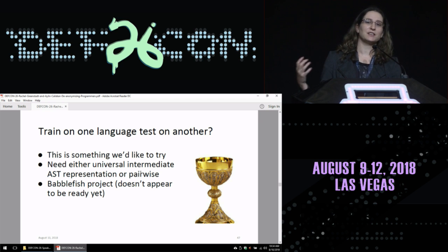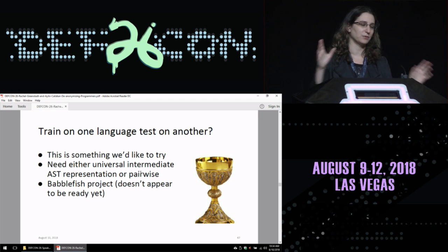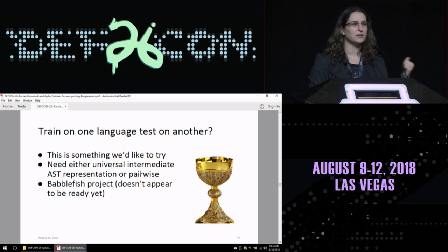One of the holy grail kind of applications of this would be able to test on, to train on one language and test on another language. We don't know currently how much does your programming style change when you actually change languages. To do this, we need some sort of universal intermediate AST representation or some sort of just pairwise porting between two languages. There is a project to work on this. It's like the Babelfish project, but it doesn't really appear ready yet for this kind of application. It's something we're planning to look into a little bit if people know about sort of generic AST representations. That would be another thing we'd love to get your feedback on.